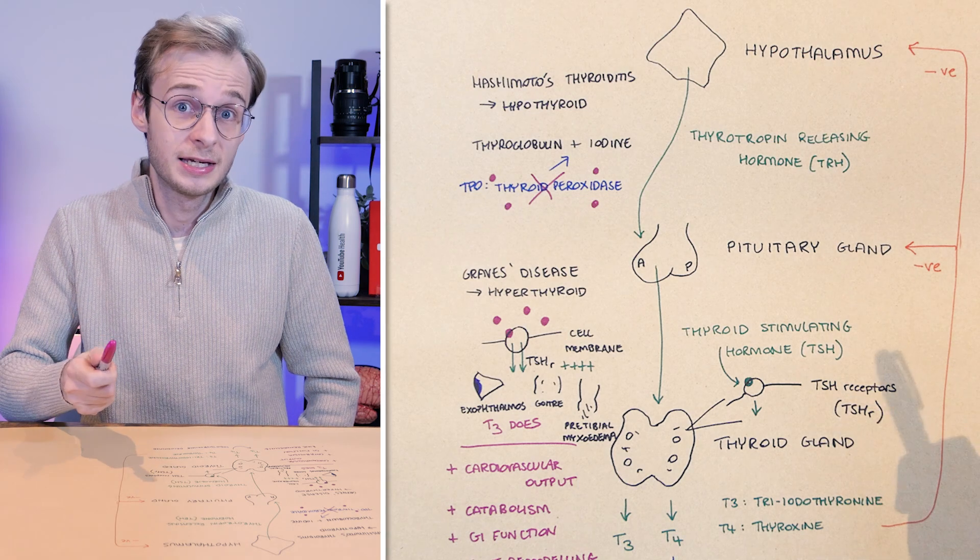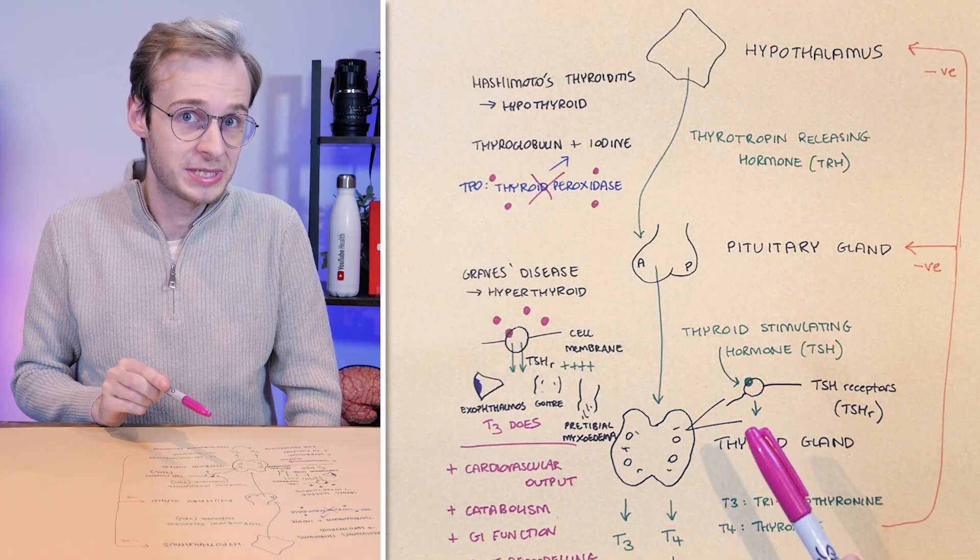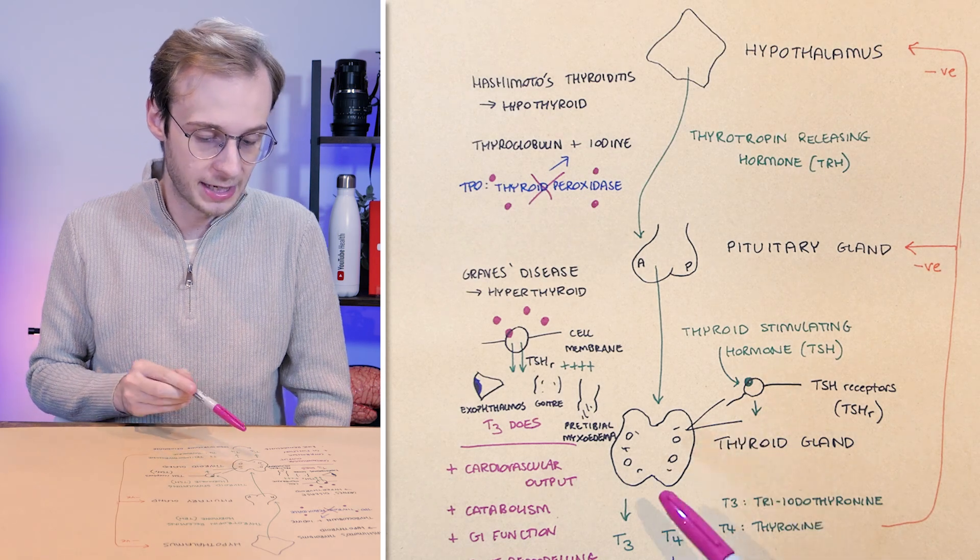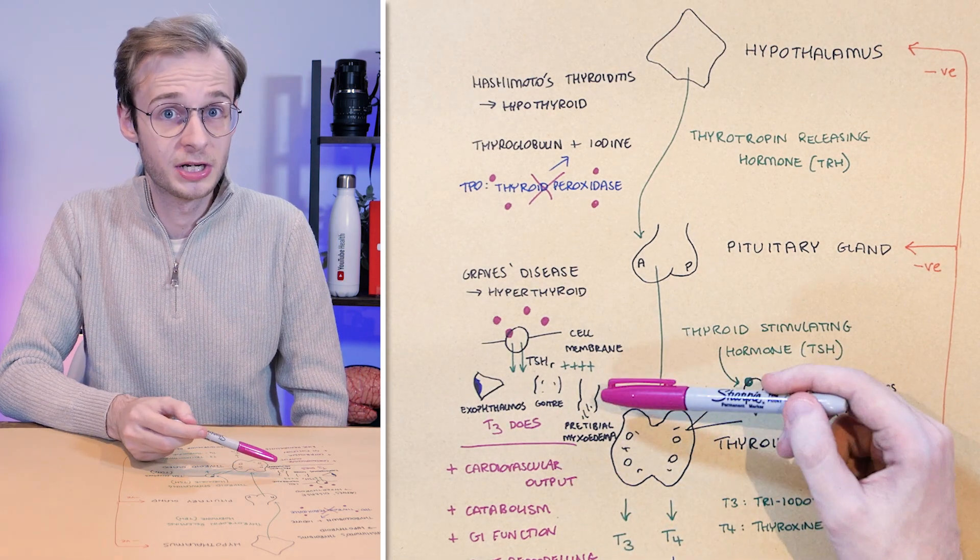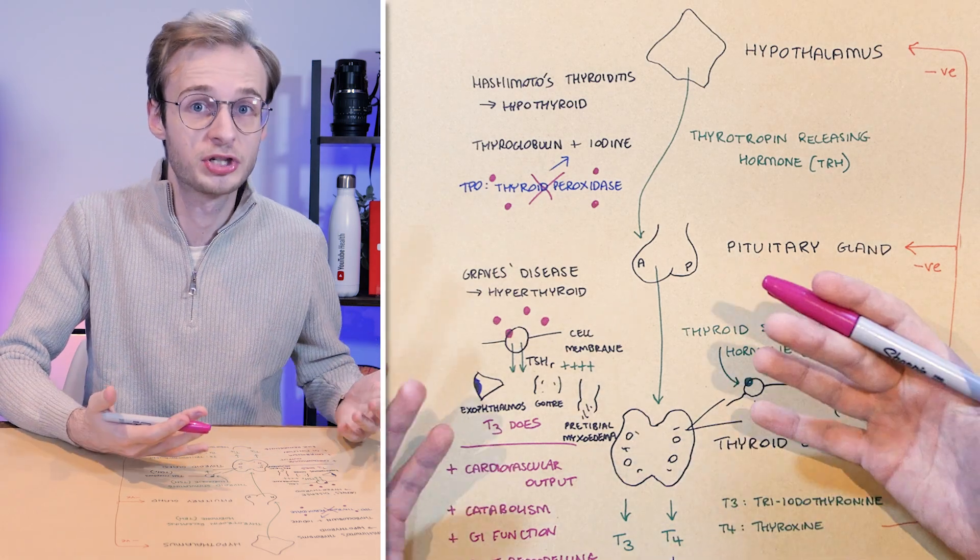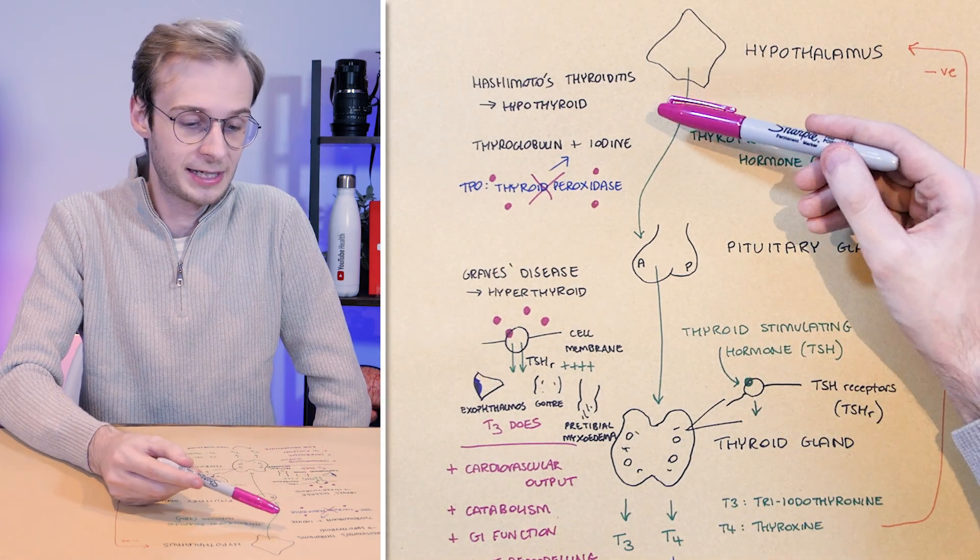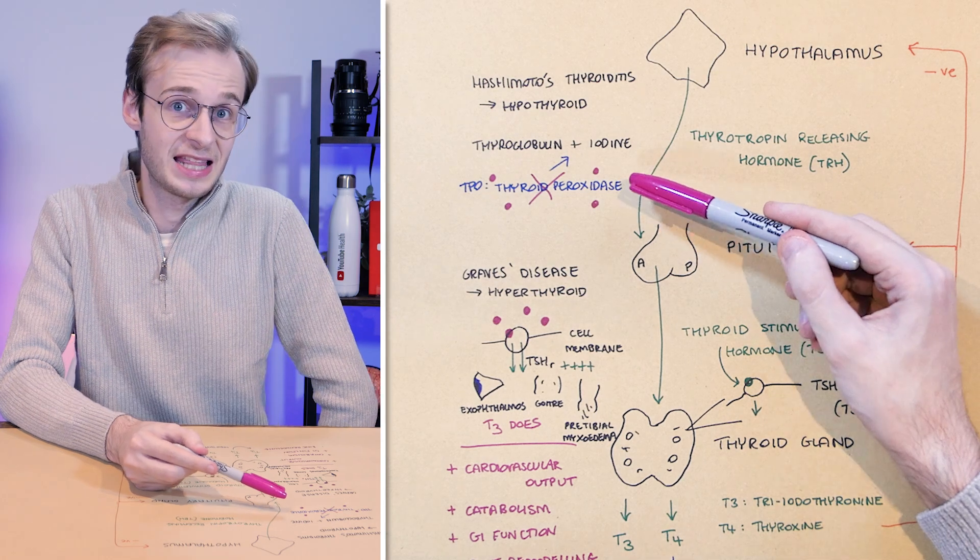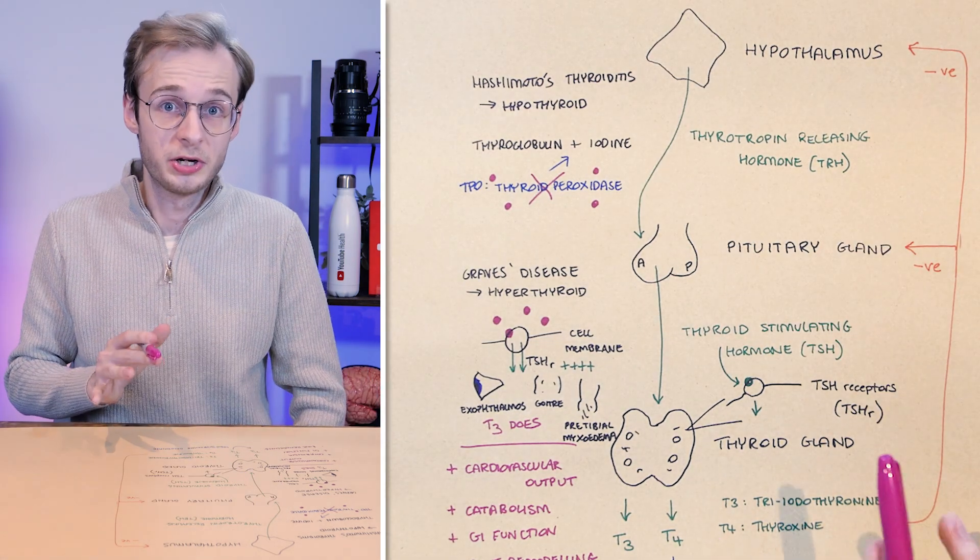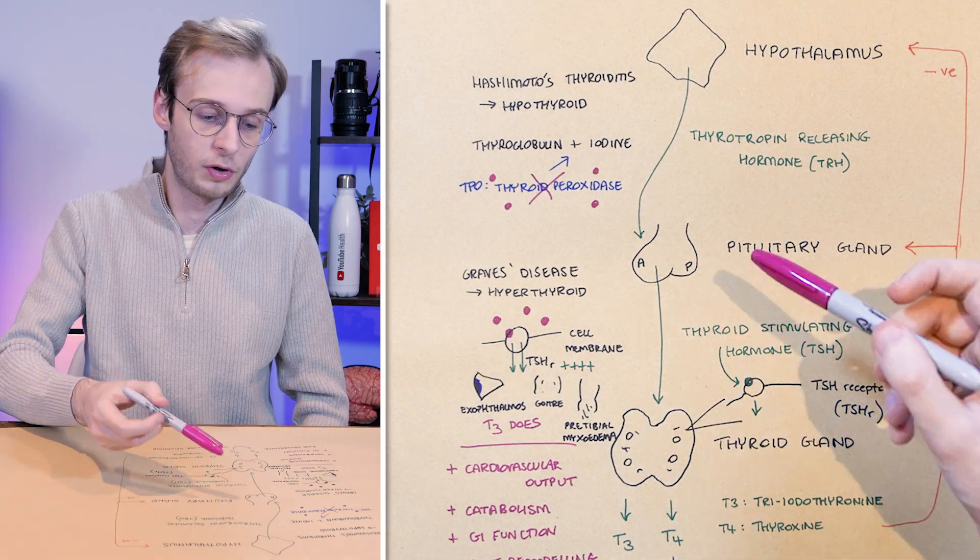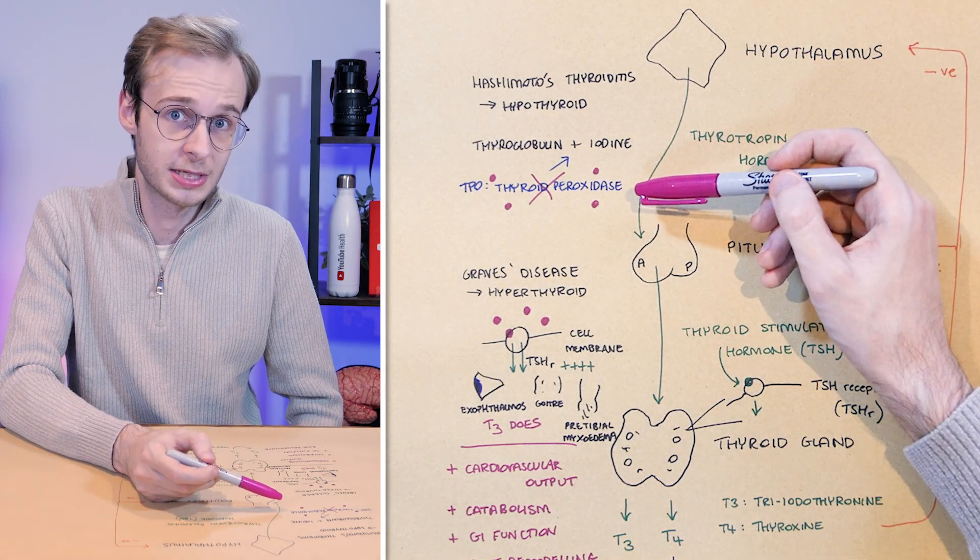There are two key conditions to know about. One is Graves' disease, where you develop antithyroid stimulating hormone receptor antibodies, which bind to that receptor and cause it to be permanently active, resulting in too much thyroid hormone. And the other key condition is Hashimoto's thyroiditis, where you develop antithyroid peroxidase, anti-TPO antibodies, which make us unable to produce the T3 and T4 hormones, which rely on the presence of this enzyme thyroid peroxidase.